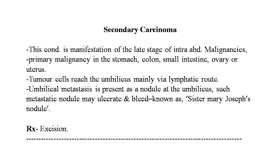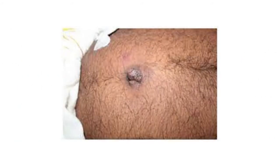Secondary carcinoma of the umbilicus is a manifestation of late-stage intra-abdominal malignancies. Primary malignancy in the stomach, colon, small intestine, ovary, or uterus spreads to the umbilicus mainly via lymphatics. Umbilical metastasis presents as a nodule — such a metastatic nodule may ulcerate and bleed, and is known as Sister Mary Joseph's nodule. Treatment is excision. An image of secondary carcinoma spread through the lymphatic system is shown.